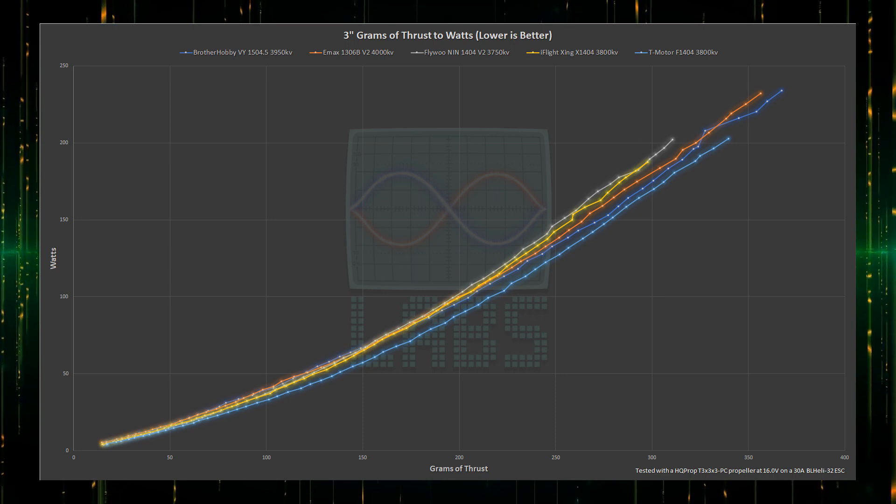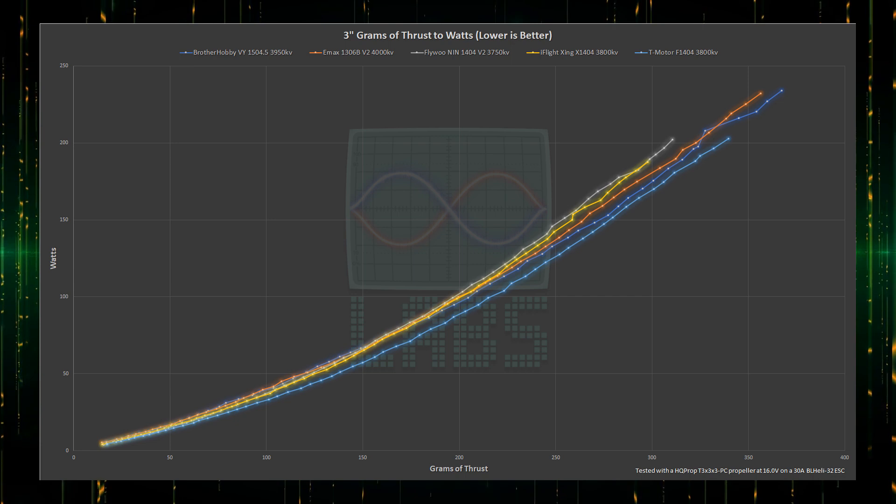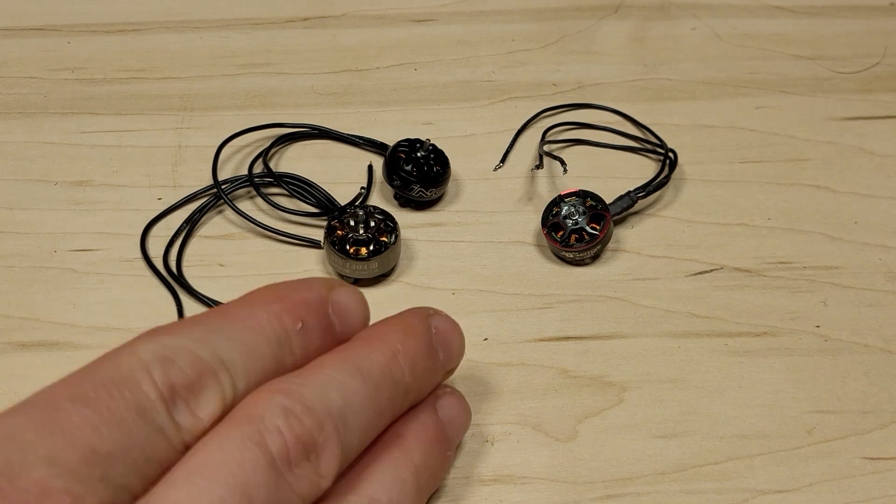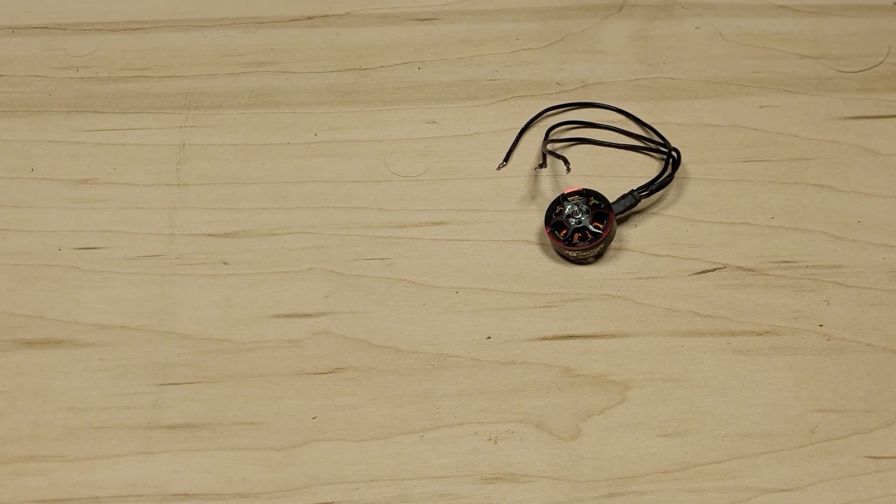Well, I think the winner here is clear. The T-Motor is the lightest by a significant margin, and can deliver the most thrust per watt, requiring a smaller battery to deliver both performance and flight times. The other 1404 motors are clearly outclassed, and the heftier motors add weight and battery drain to get a little bit more top end.